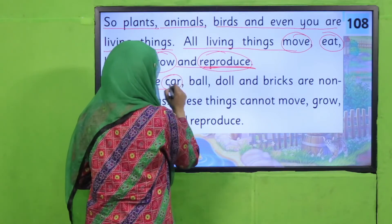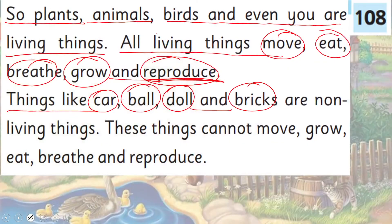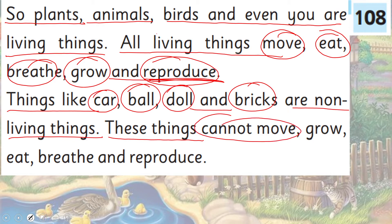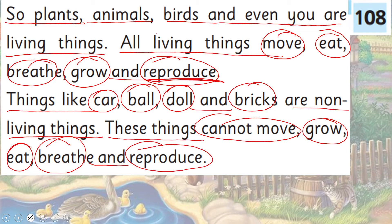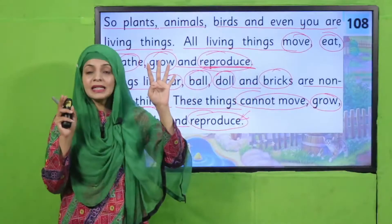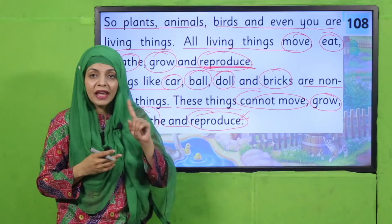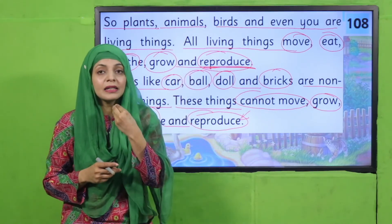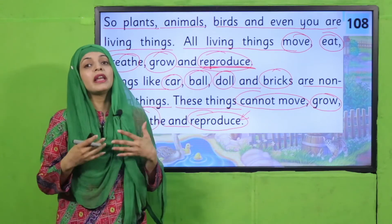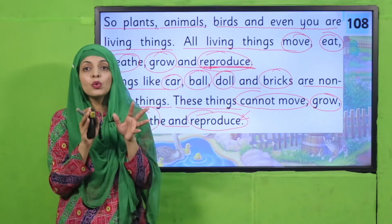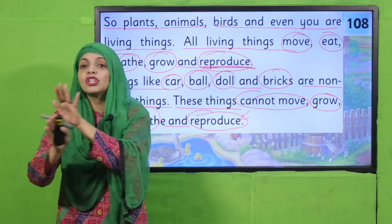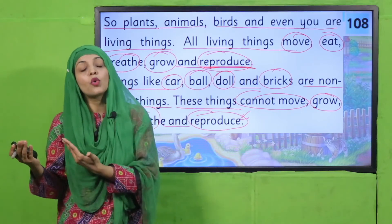Things like car, ball, doll and brick are non-living things. These things cannot move, grow, eat, breathe and reproduce. Jitne bhi non-living things hain jaise ke ball, doll, teddy bear, bricks — yeh tamam cheezein non-living hain kyunke yeh move nahin kerti, yeh grow nahin kerti, yeh khana nahin khati, yeh breathe nahin kerti aur inke babies bhi nahin hote. So now you know ke living things kya kerti hain aur non-living things woh cheezein nahin kerti — that is why we call them non-living.